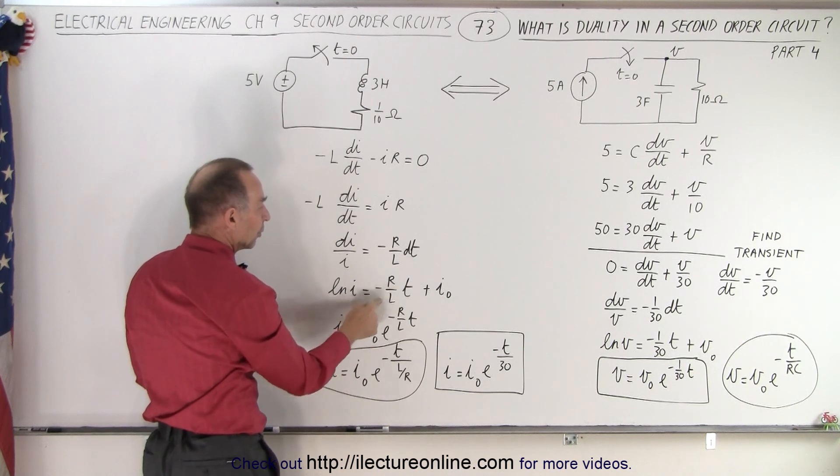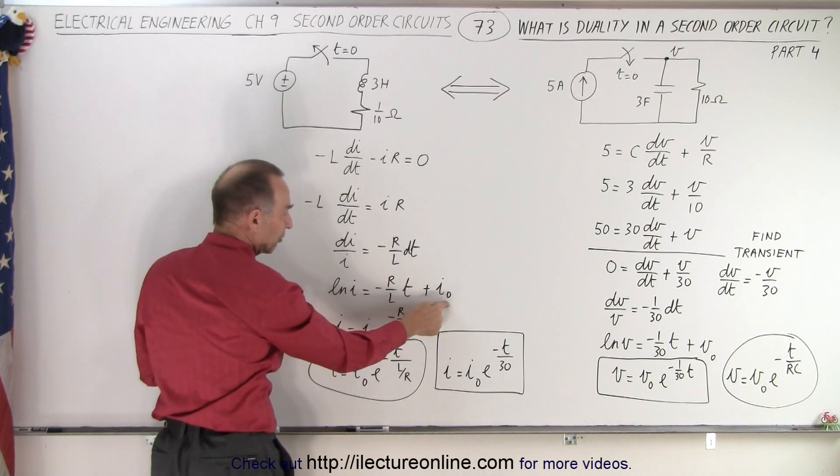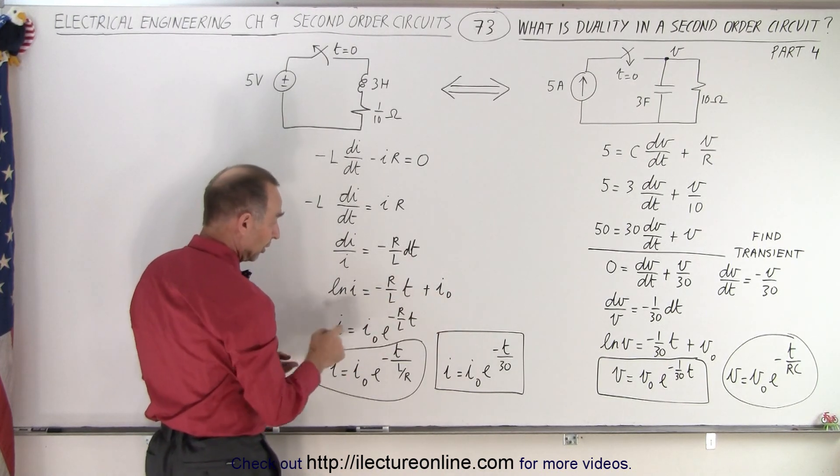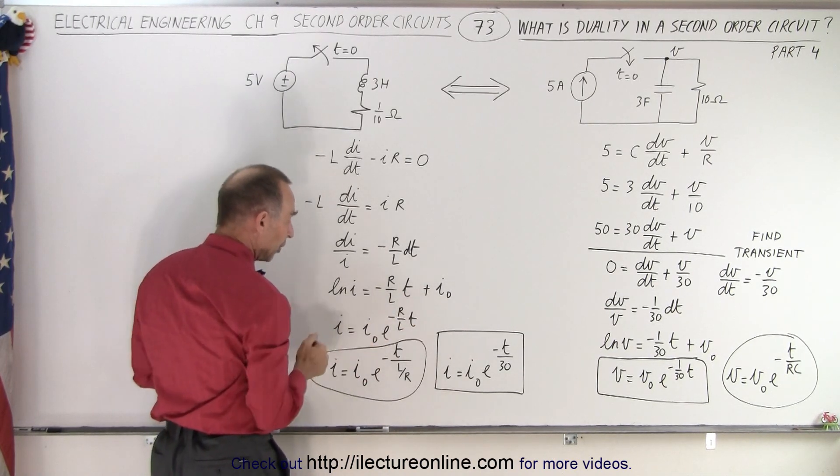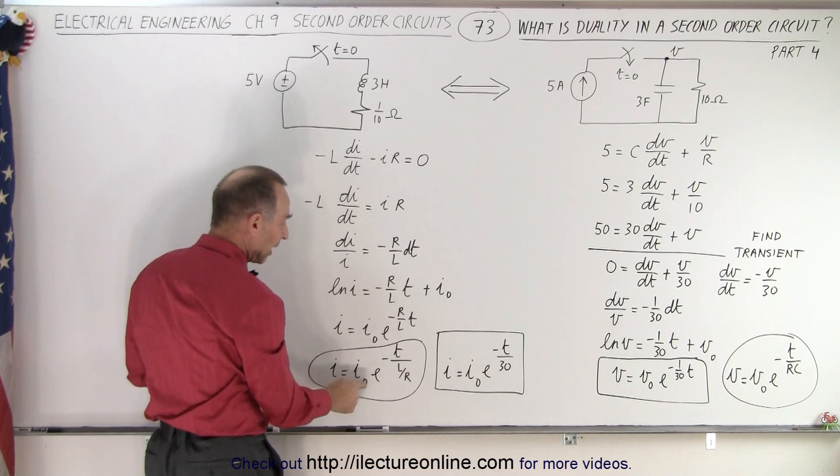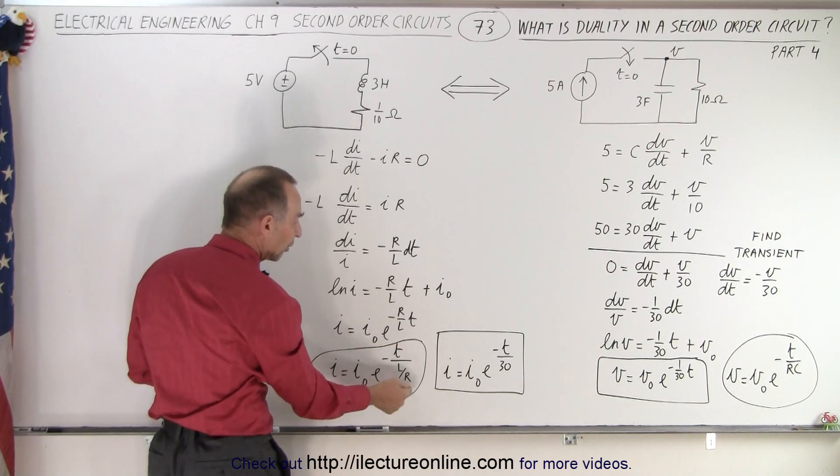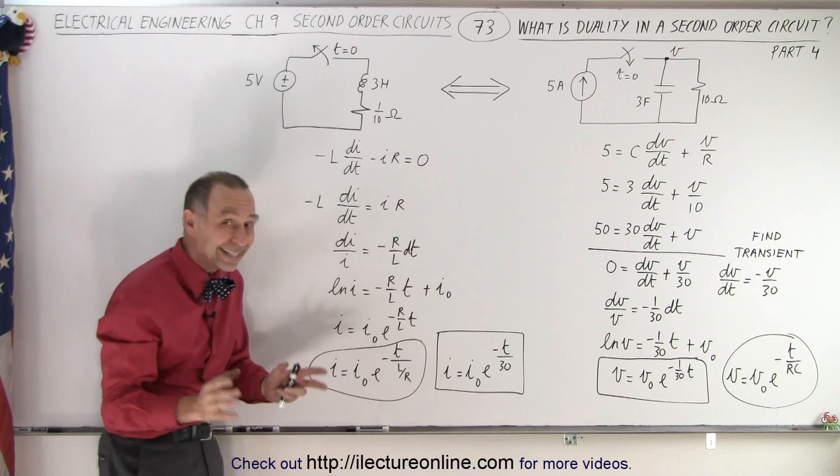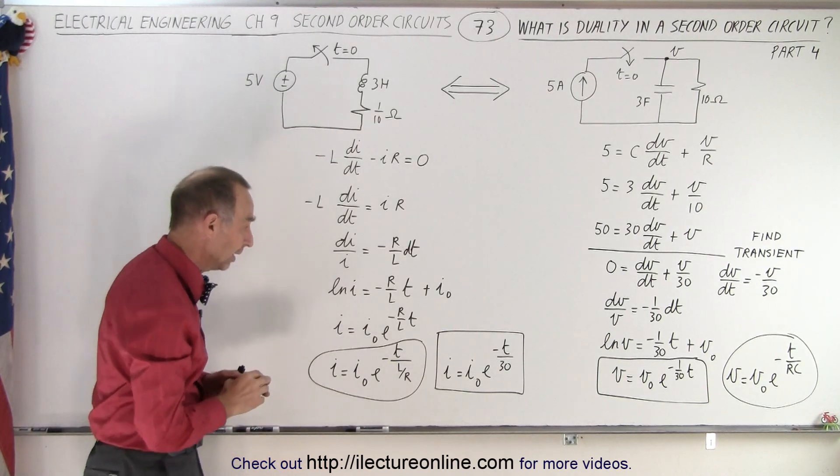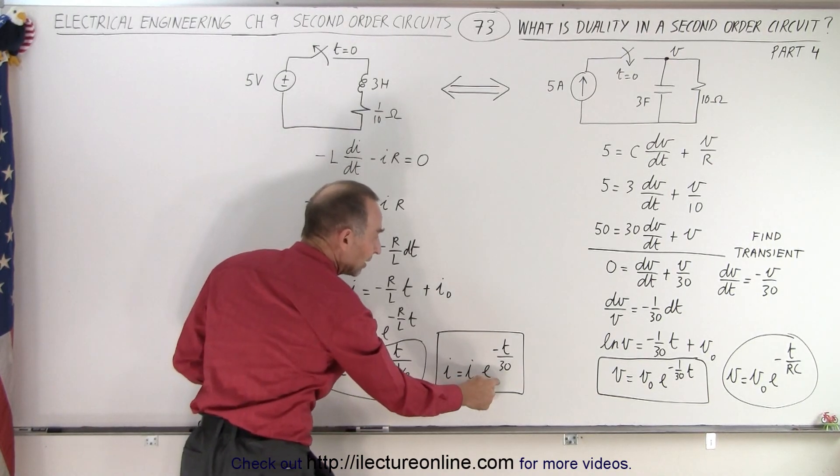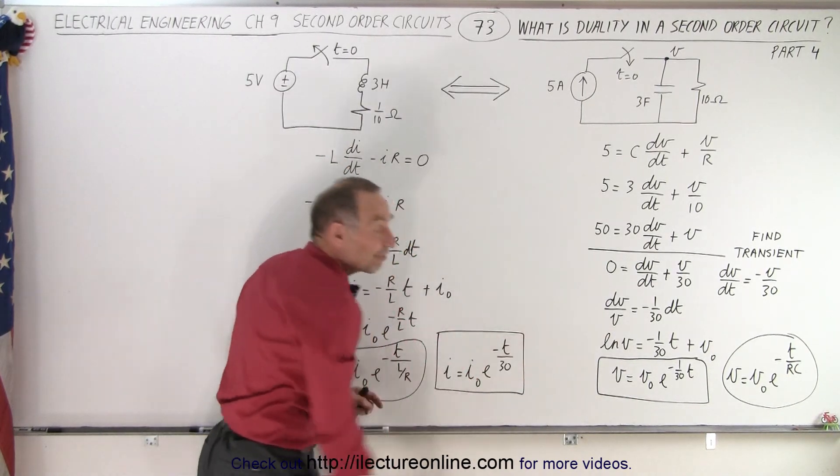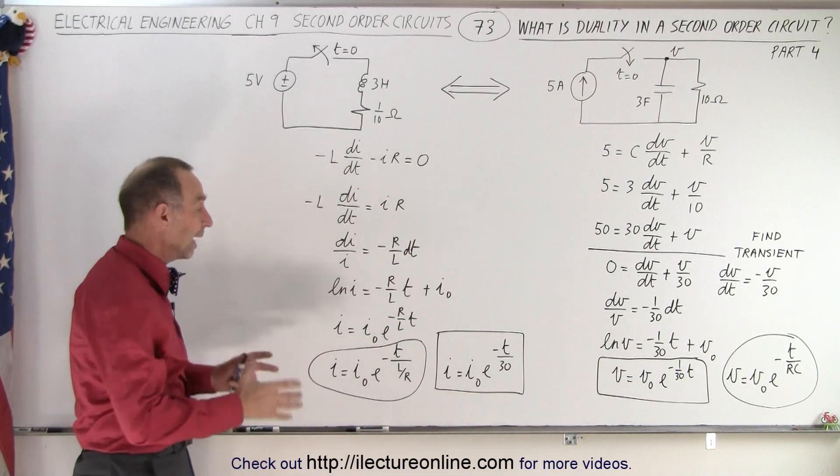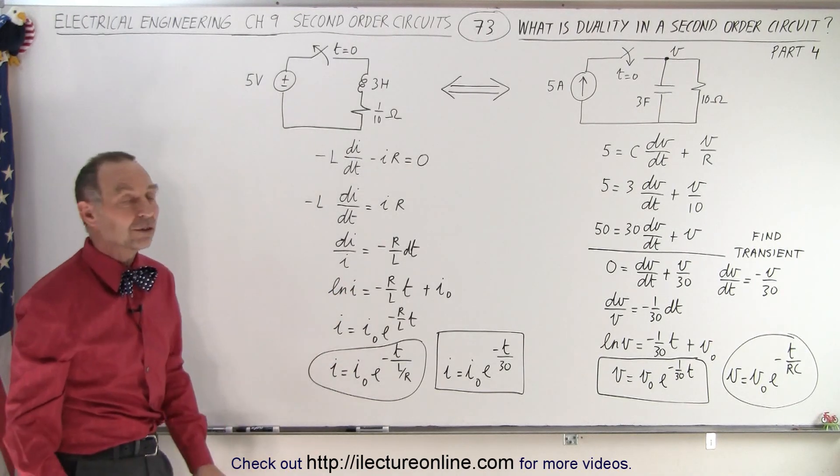so the natural log of i equals minus R over L t plus a constant of integration, which is initial current. We then take the anti-log of both sides, we solve for i, and we have i equals i sub naught e to the minus t over L over R. Now notice L over R is the time constant for an LR circuit. And then if we put the numerical value in there, notice we get the exact same format of the differential equation and the solution to the differential equation